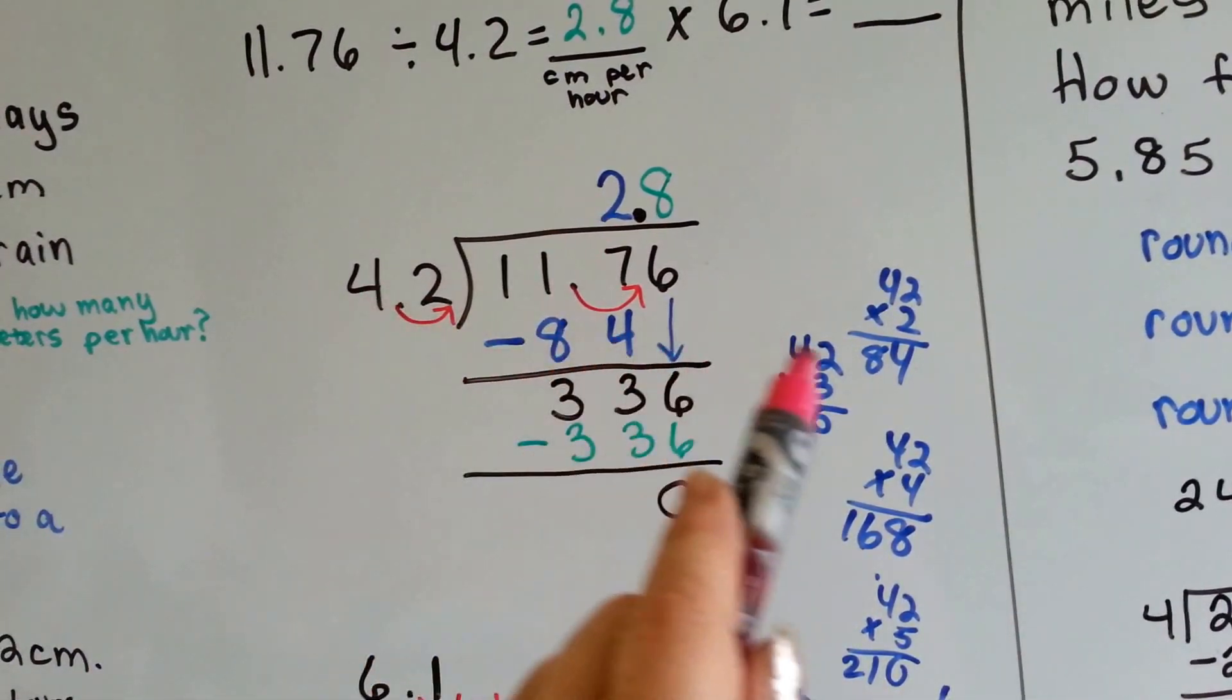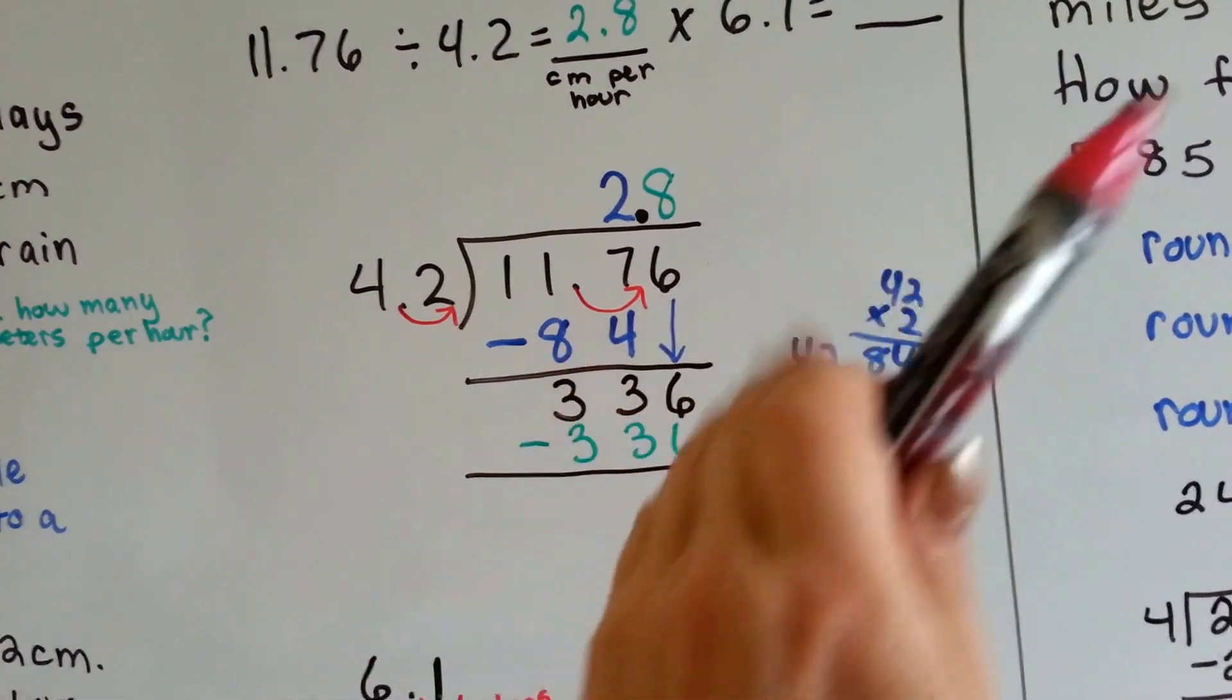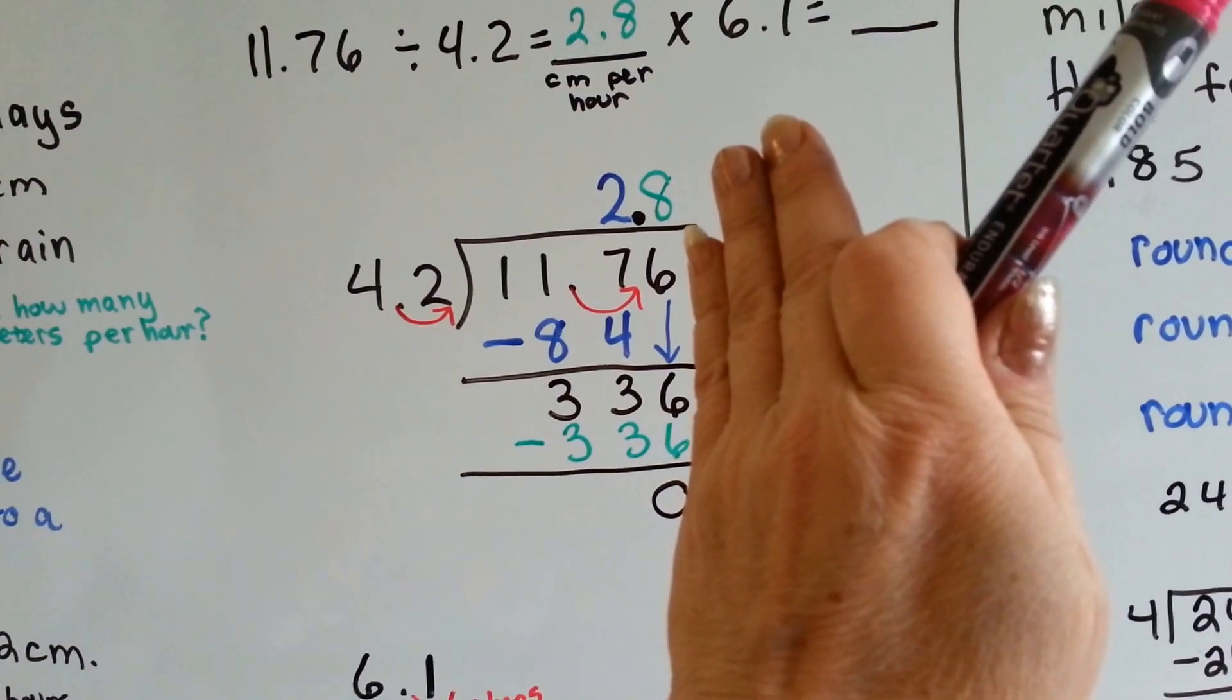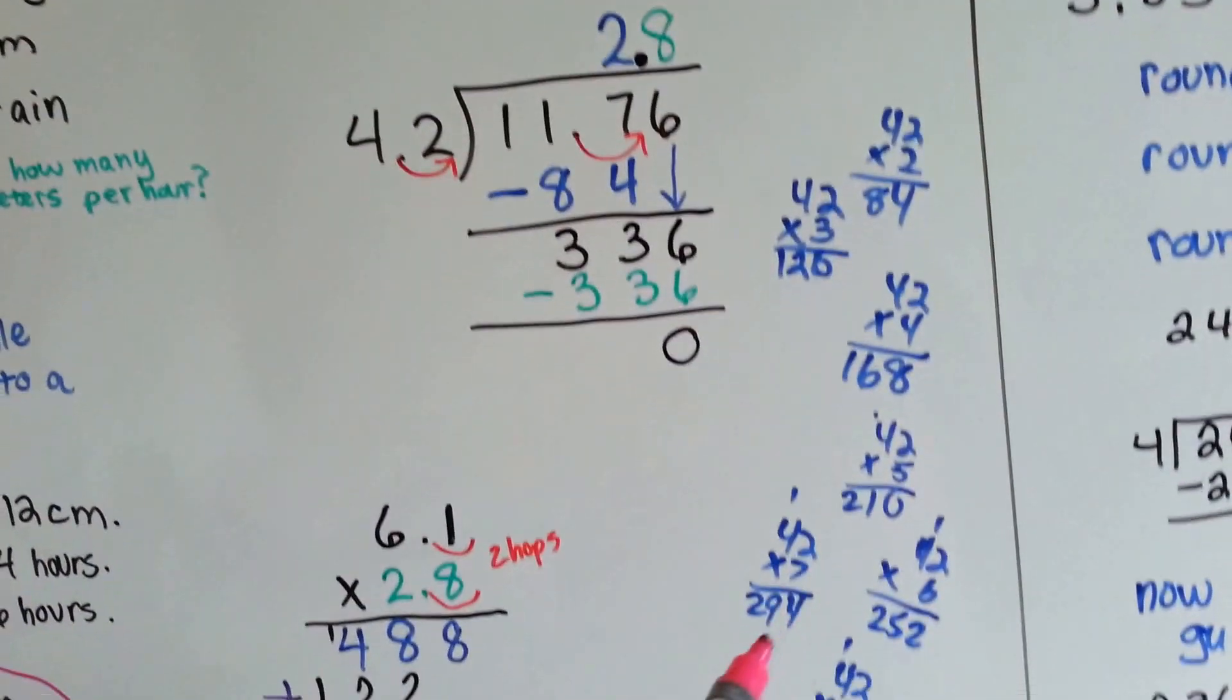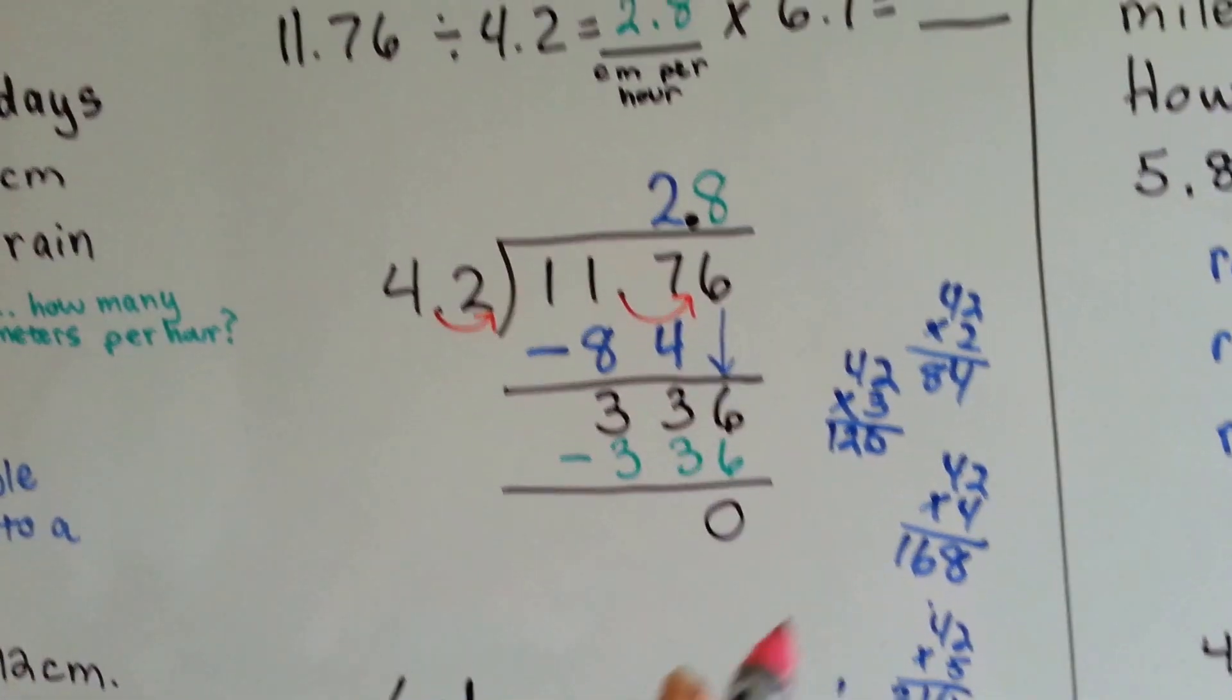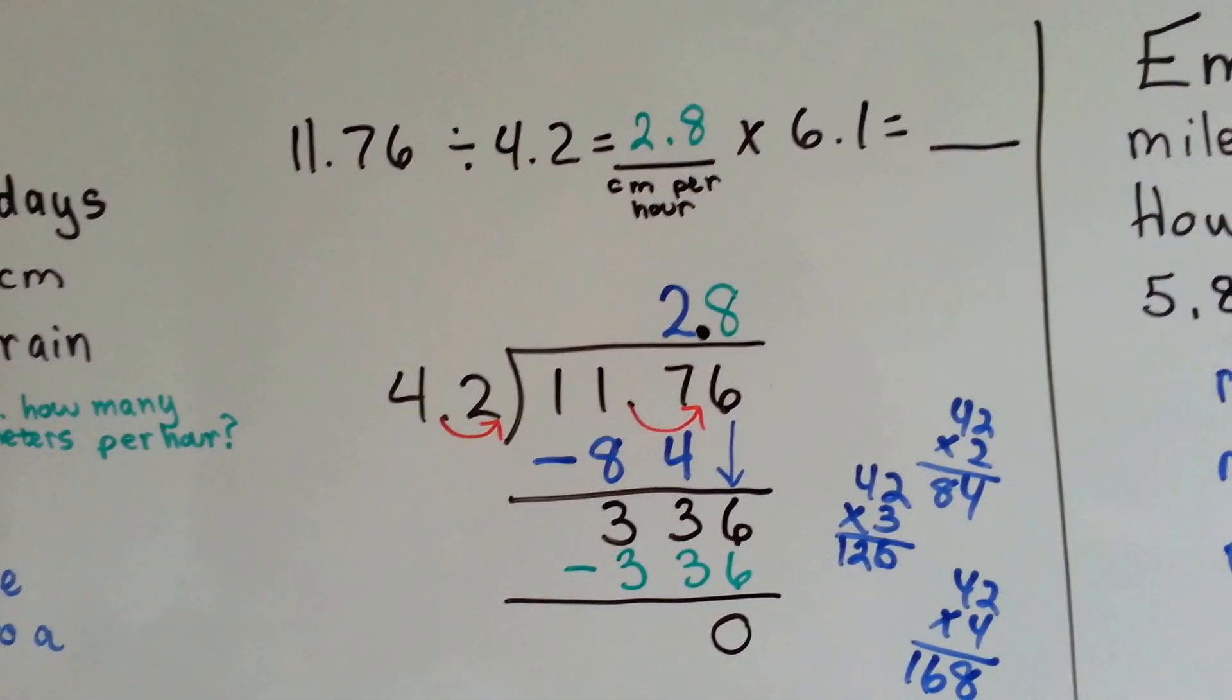We put our 2 here, and we already did our multiplication. We subtract our 84 and get 33. The 6 is turned to come down. 42 goes into 336. From the math on the side, we see 8 is perfect, and we know it rained 2.8 cm per hour.